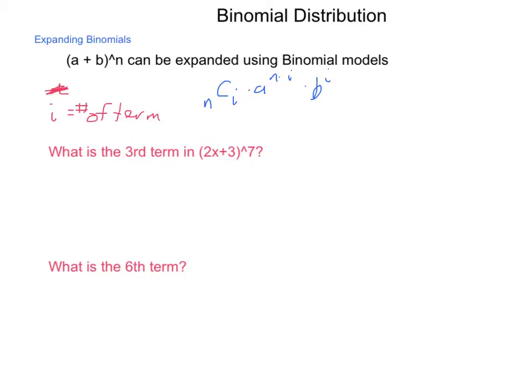I is the number of the term. If I want a specific term out of this, then what I will have is n choose i times the value of a to the n minus i times b to the i. We would be able to work that for other items, other expansions. So what is the third term of 2X plus 3 to the 7th?